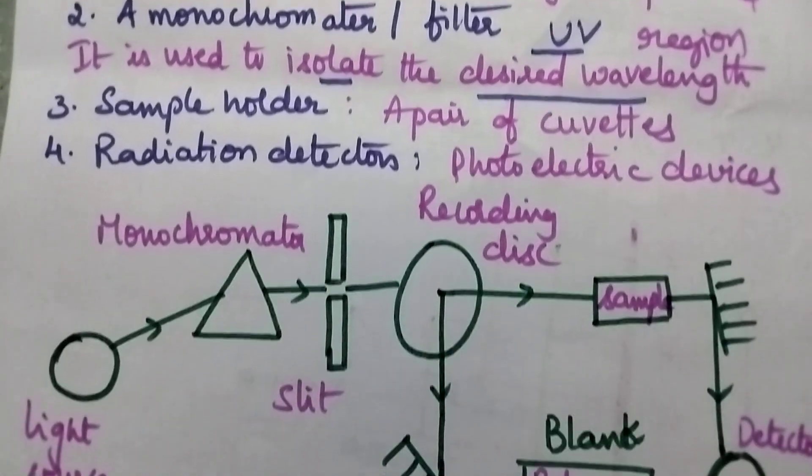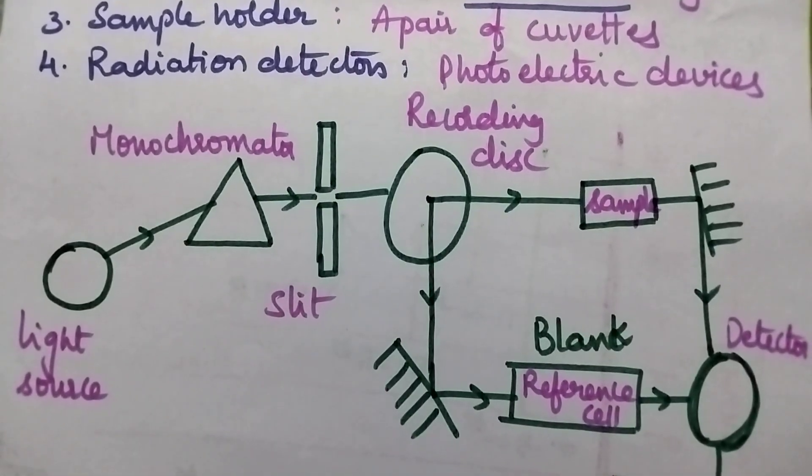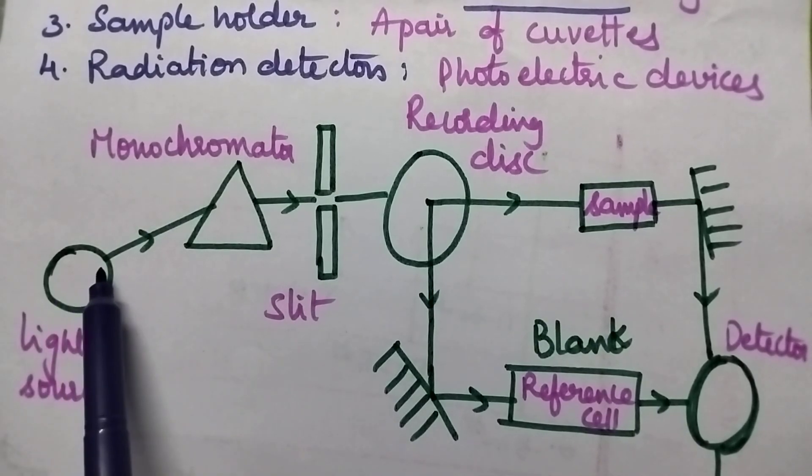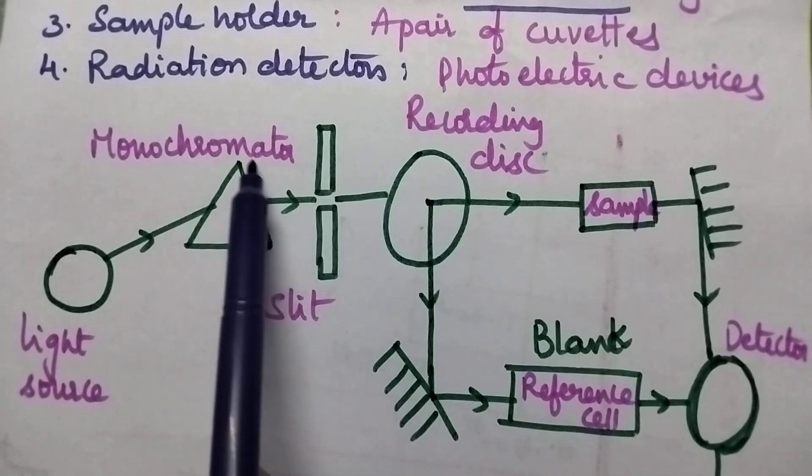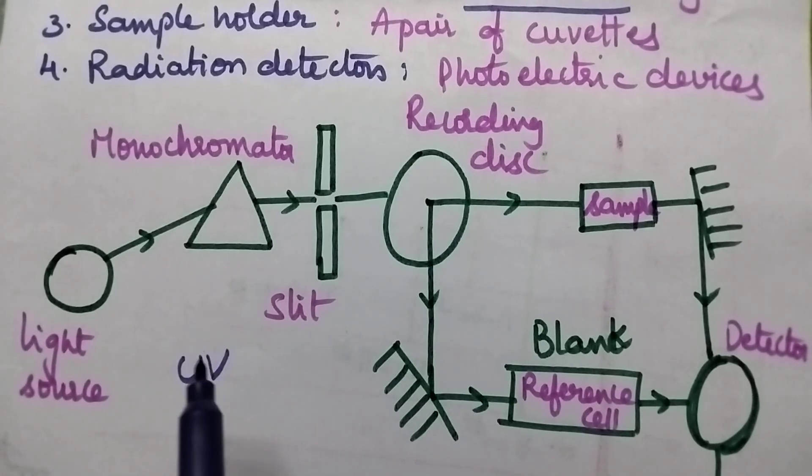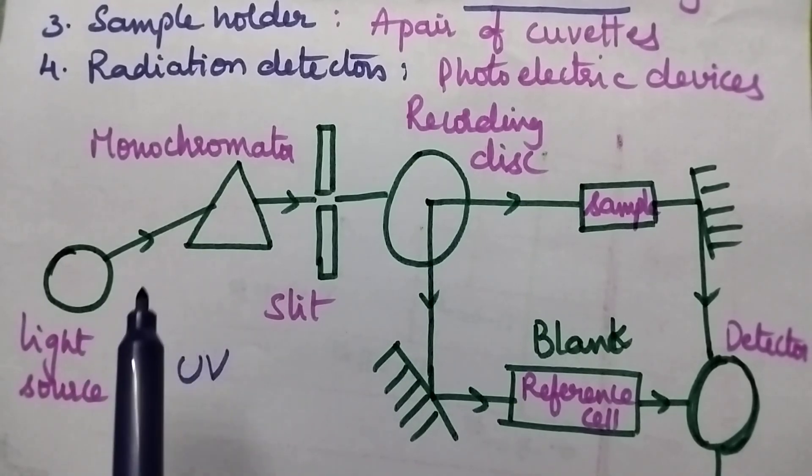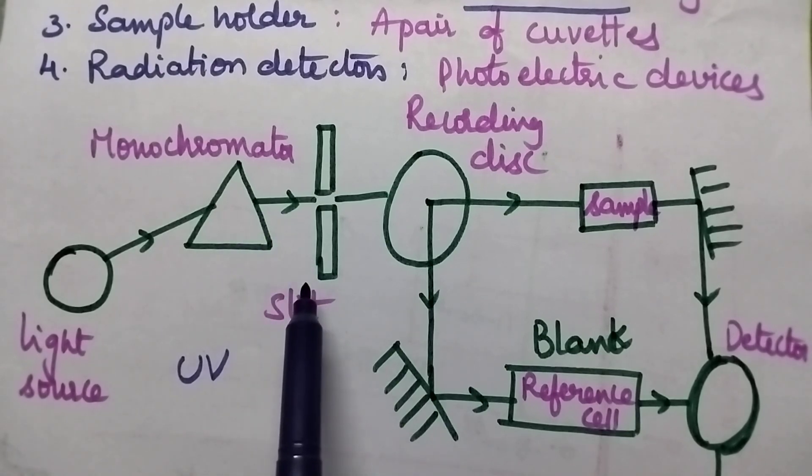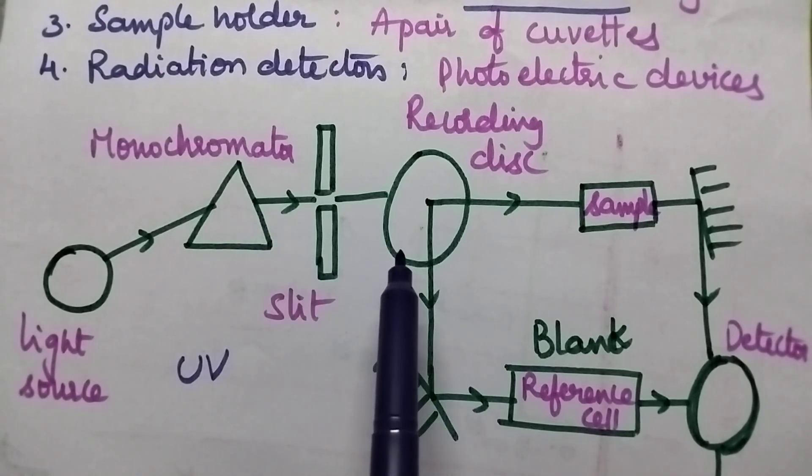Coming to the working principle. Here the hydrogen or deuterium lamp is used as the light source. Whenever the radiation falls on the monochromator, it is capable of isolating UV radiations from the remaining radiations. The UV radiations will be passed through the slit onto the recording disc.